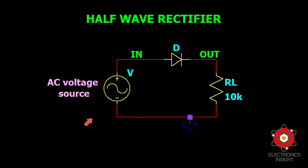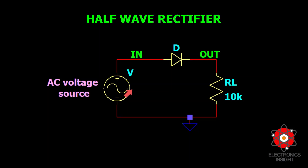The AC voltage source is a sinusoidal signal with a finite frequency, so it has both a positive half cycle and a negative half cycle. During the positive half cycle, the diode D is forward biased, current flows through the load RL, and a voltage is developed across it. During the negative half cycle, the diode is reverse biased, there is no current flow through RL, and the output voltage is zero.